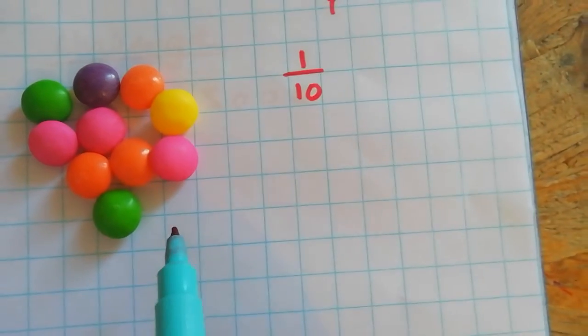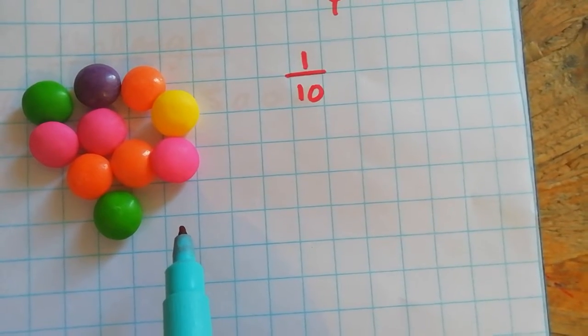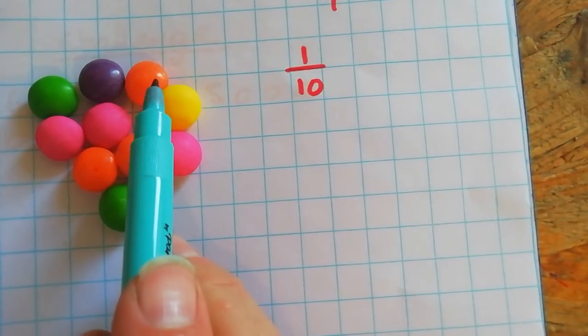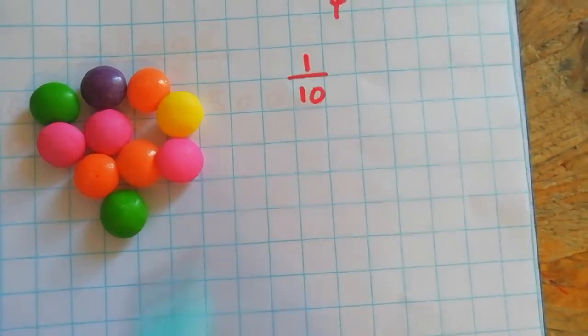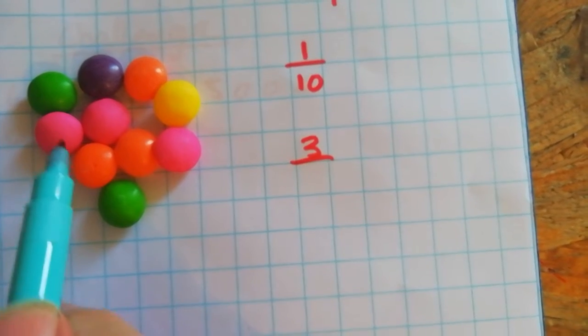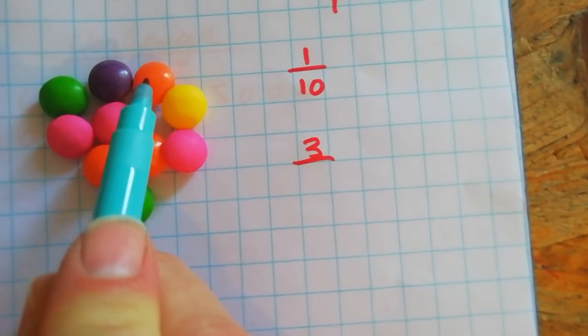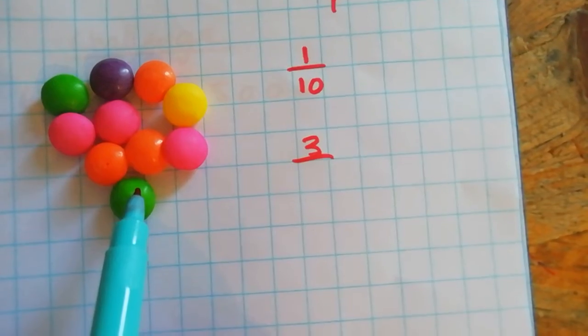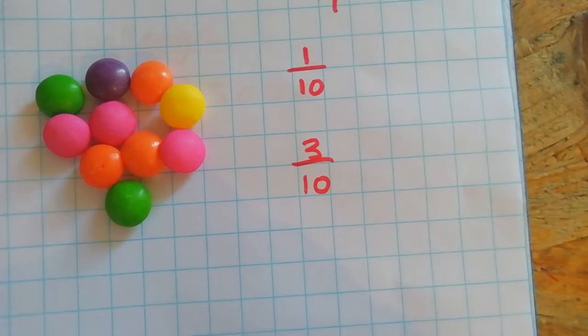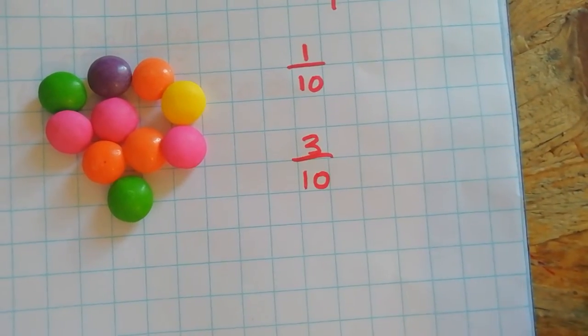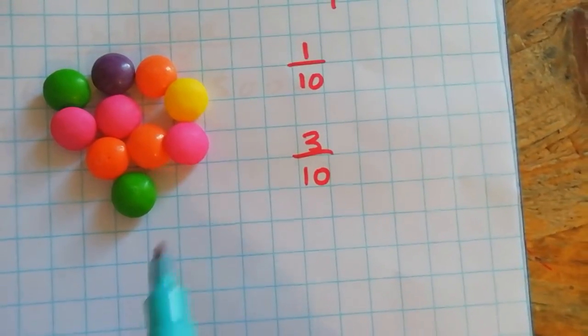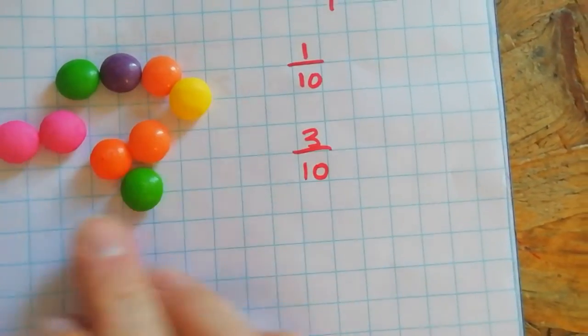What fraction of these sweets are orange? Well I guess if I get one, two, three... I can find three orange ones out of a total of ten. Three tenths of these sweets are orange. If I ask it the other way around, what is three tenths of ten, then our answer is going to be three.